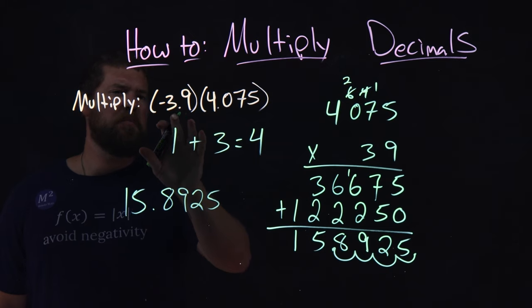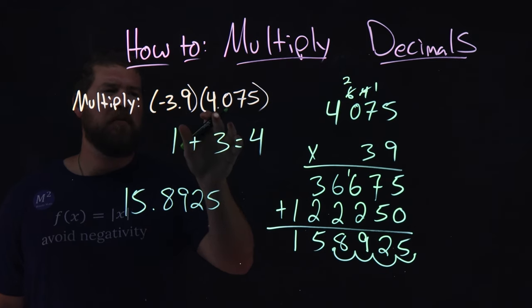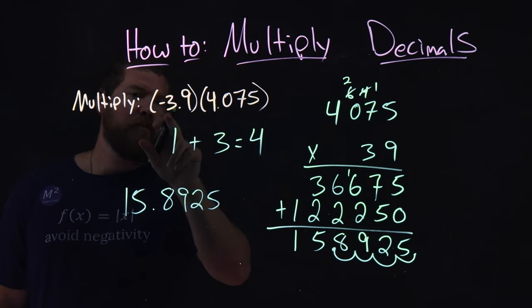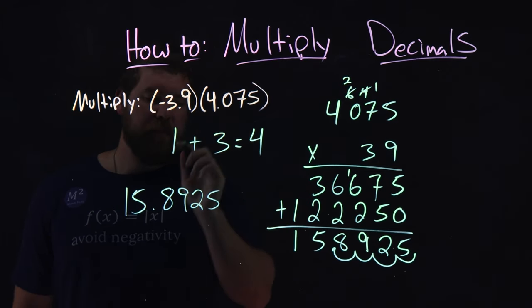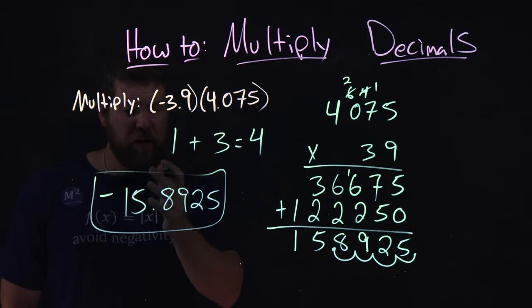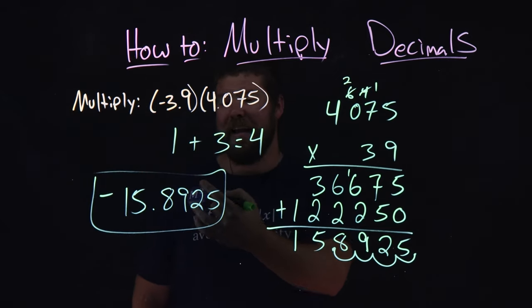And that kind of makes sense. That's 3.9 times 4, or 5 gives us 15. Kind of close there. But notice, it was a negative times a positive. Got to put a negative right there. And so, there we have it. Our final answer here is negative 15.8925.